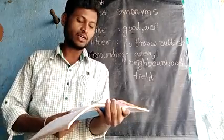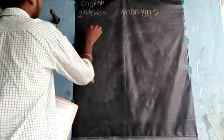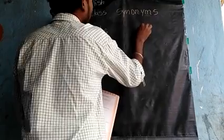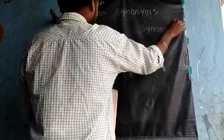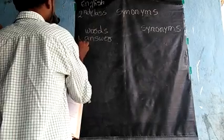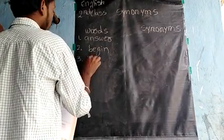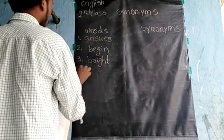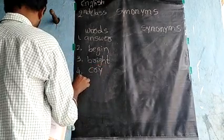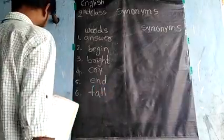The matching exercise is given on page number 22. Open page number 22. Here on the other side, synonyms are given. First one: answer. Second one: begin. Third one: right. Fourth one: cry. Fifth one: end. Sixth one: five — here.